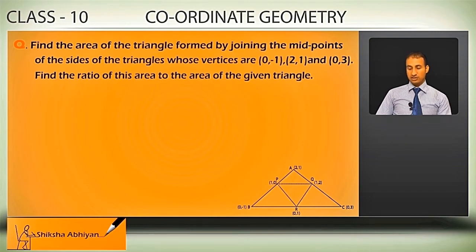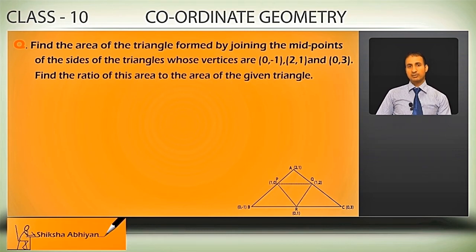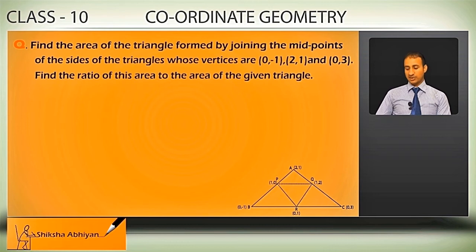We have 3 vertices: (0,-1), (2,1), and (0,3). The triangle formed from these vertices — we need to find the midpoints of its sides, then find the area of the triangle formed by joining those midpoints. After finding that area, we also need to find the ratio of that area to the area of the given triangle.